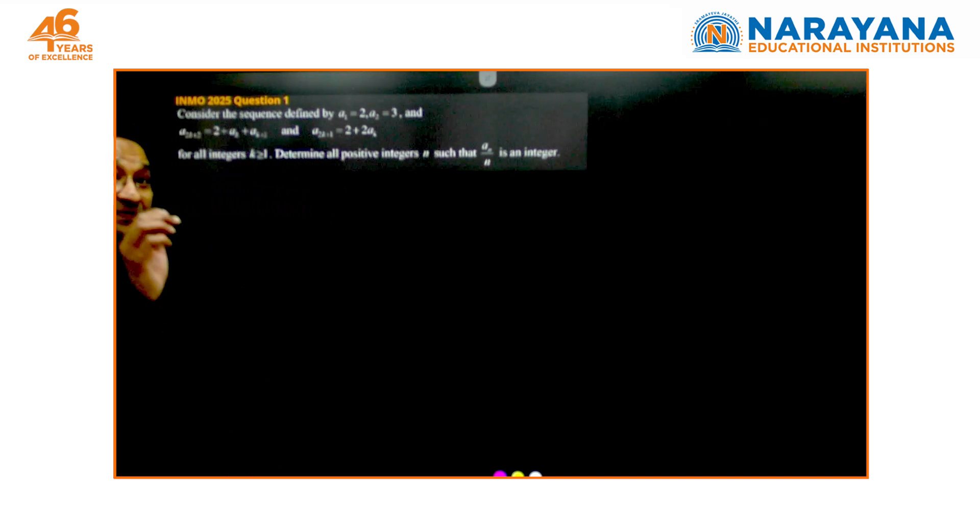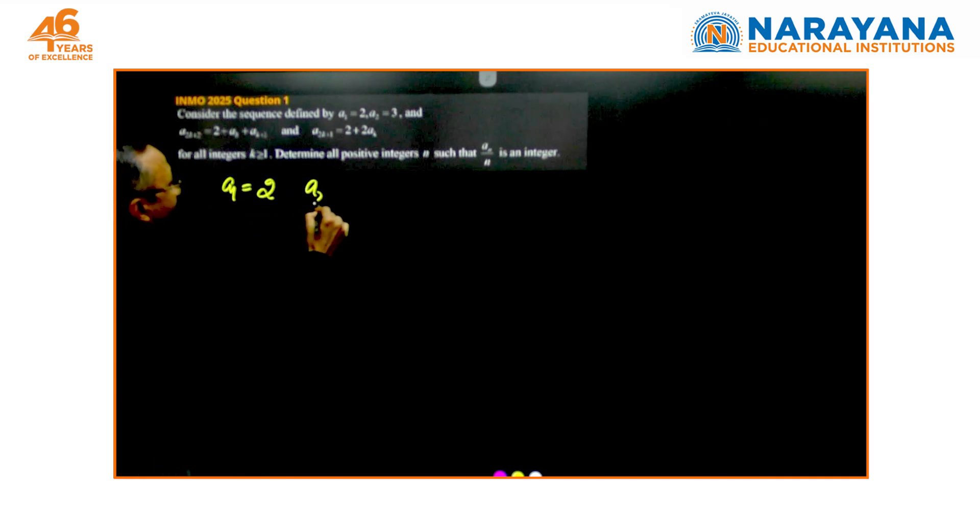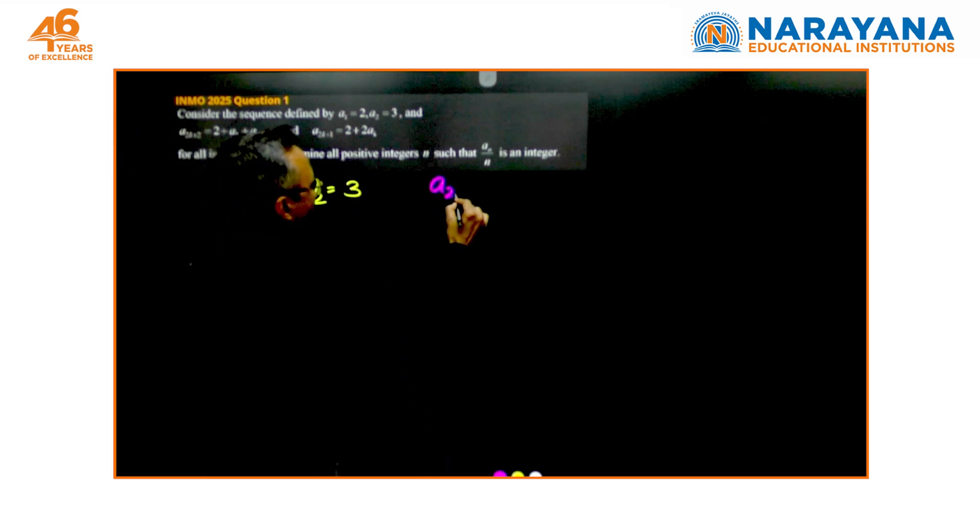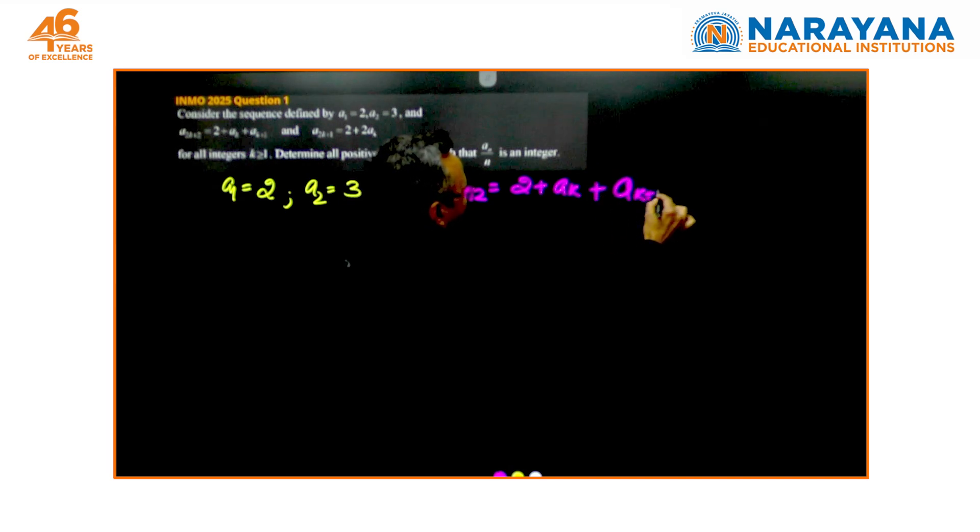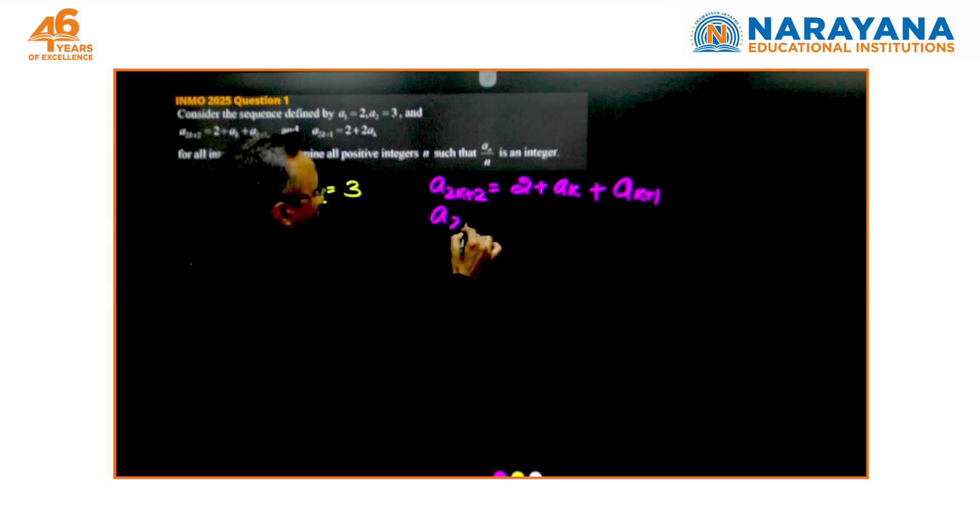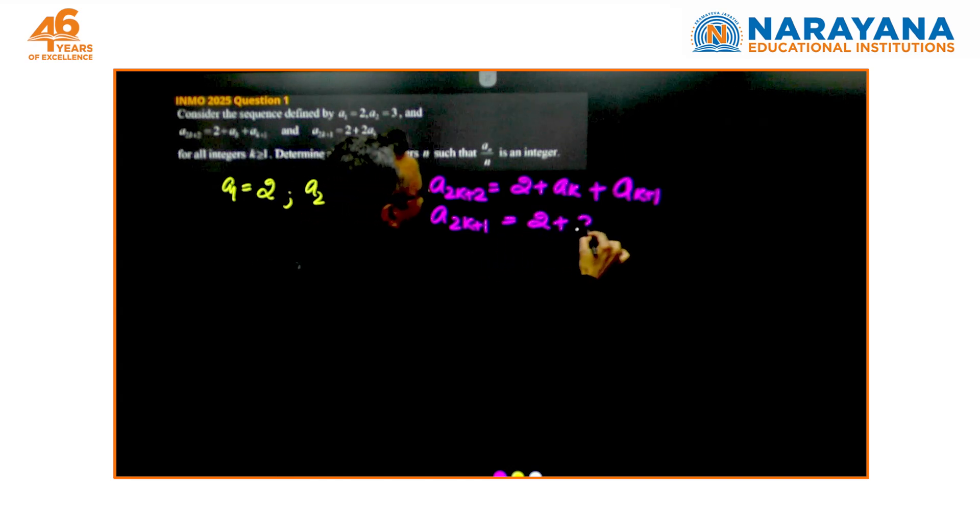The question says, consider a sequence defined by the first two terms. a1 is 2, a2 is 3, and the recurrences are a2k+2 equals 2 plus ak+1, and simultaneously a2k+1 is 2 plus 2ak.